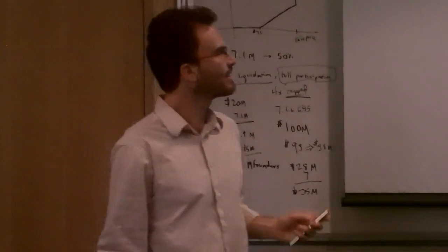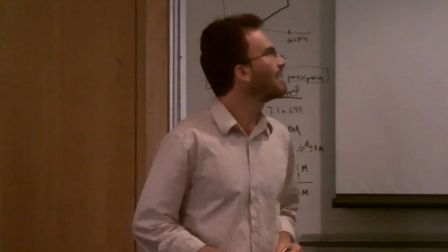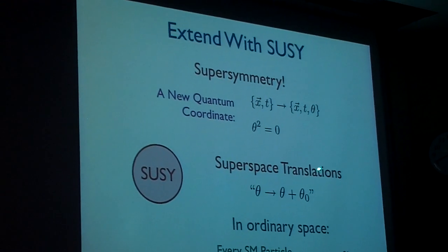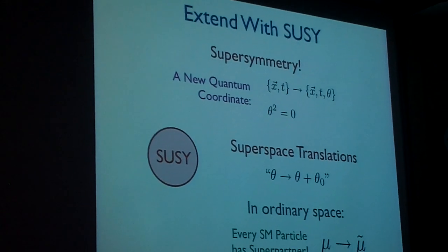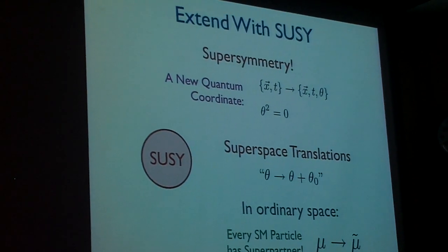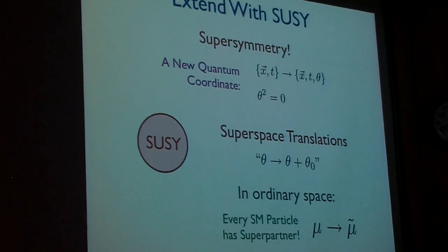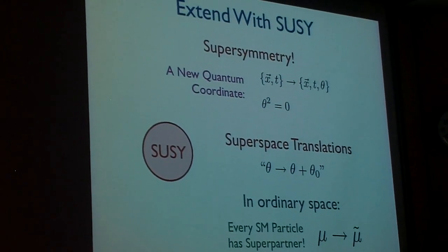So one way of expanding the symmetry structure of space-time is to introduce supersymmetry. Supersymmetry takes the ordinary bosonic coordinates, x and t, and augments them so that we're living in superspace—a fermionic coordinate, a Grassmann coordinate, whose square is zero, something very confusing to visualize.